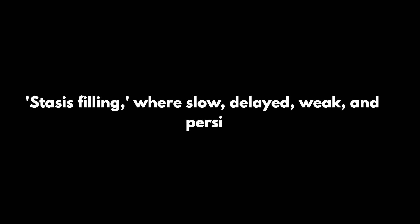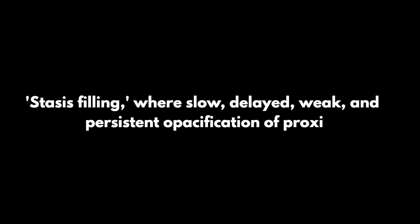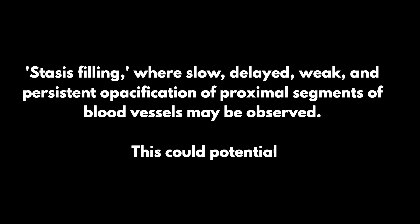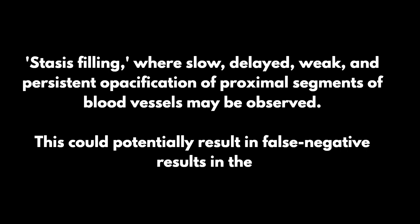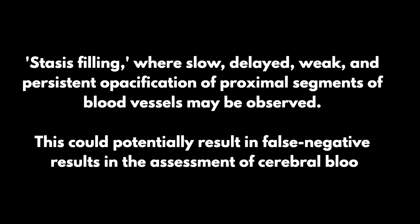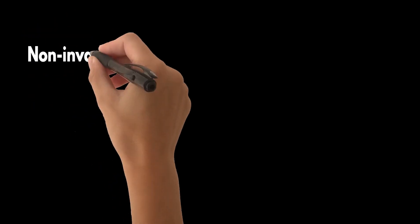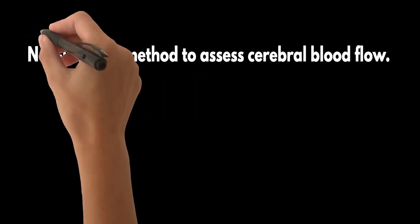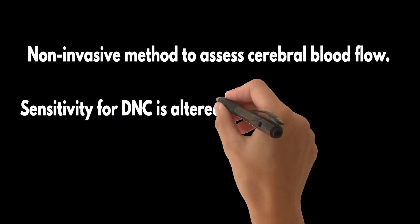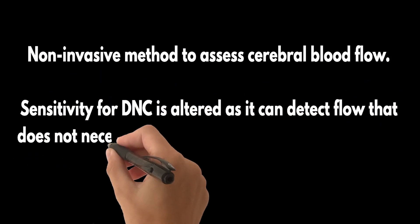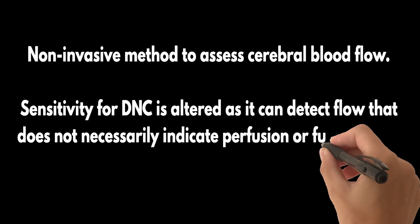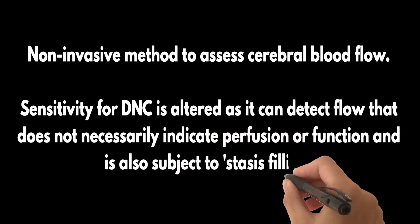Cerebral angiography involves the demonstration of absence of blood flow in all major intracranial vessels to support DNC. However, interpretation can be complicated by a phenomenon known as stasis filling, where slow, delayed, weak, and persistent opacification of proximal segments of blood vessels may be observed, potentially resulting in false negative results. Next up, we have computed tomography angiography, or CTA — a non-invasive method to assess cerebral blood flow. Similar to angiography, its sensitivity for DNC is altered as it can detect flow that does not necessarily indicate perfusion or function and is also subject to stasis filling.